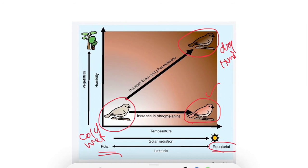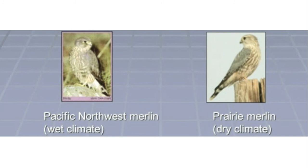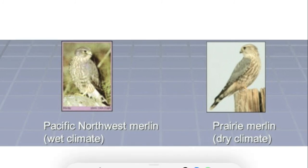This difference is also observed in human skin color. In the human population, those present towards the equator have more pigmentation in their skin — they are darker — while those present near the polar region have lighter pigmentation and are lighter in color. Now look at this picture — this is about the merlin bird.